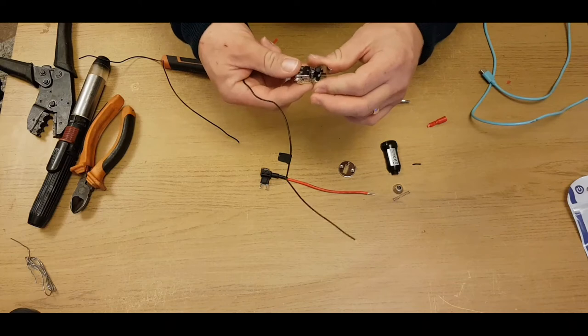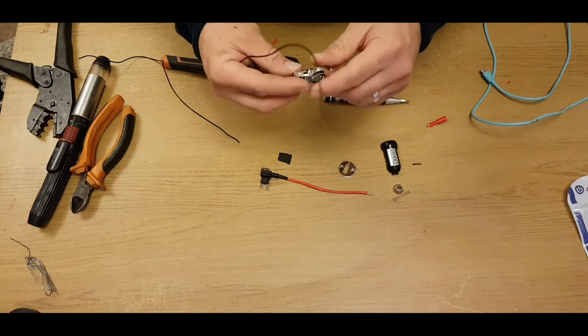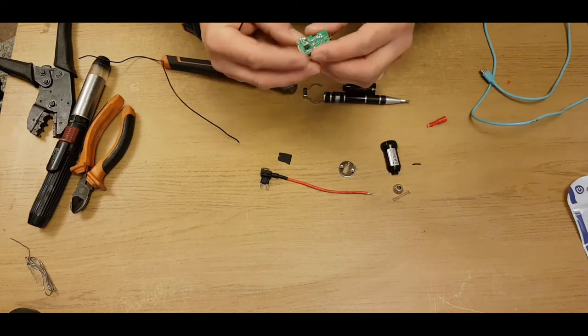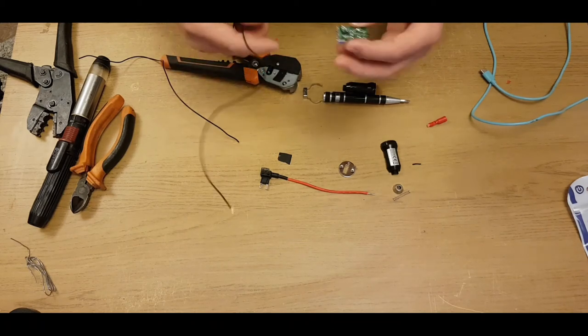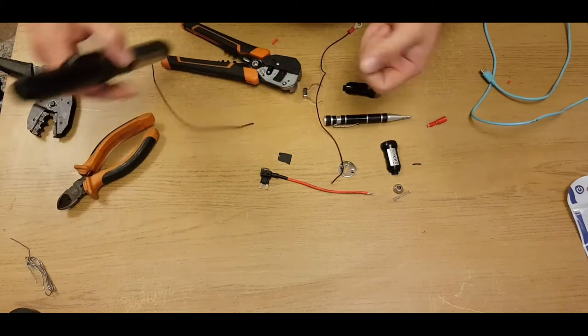Or just cut half of it down and then solder your ground onto wherever this part was coming off of on your circuit board. But this one we are going to solder it straight onto this earth tab, so you need a soldering iron.